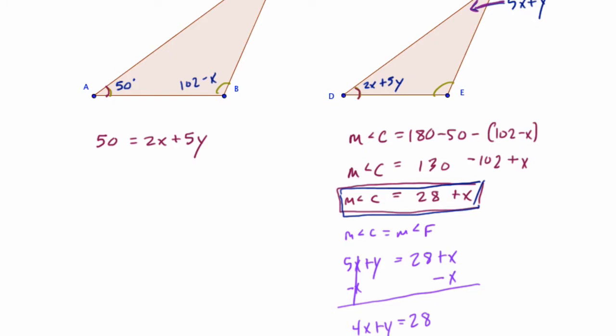So now we have a nice system of equations. Up here we have 2x plus 5y equals 50. And here we have 4x plus y equals 28. So we want to cancel out here. I can't just add or subtract these two equations to cancel out. I need to change something.